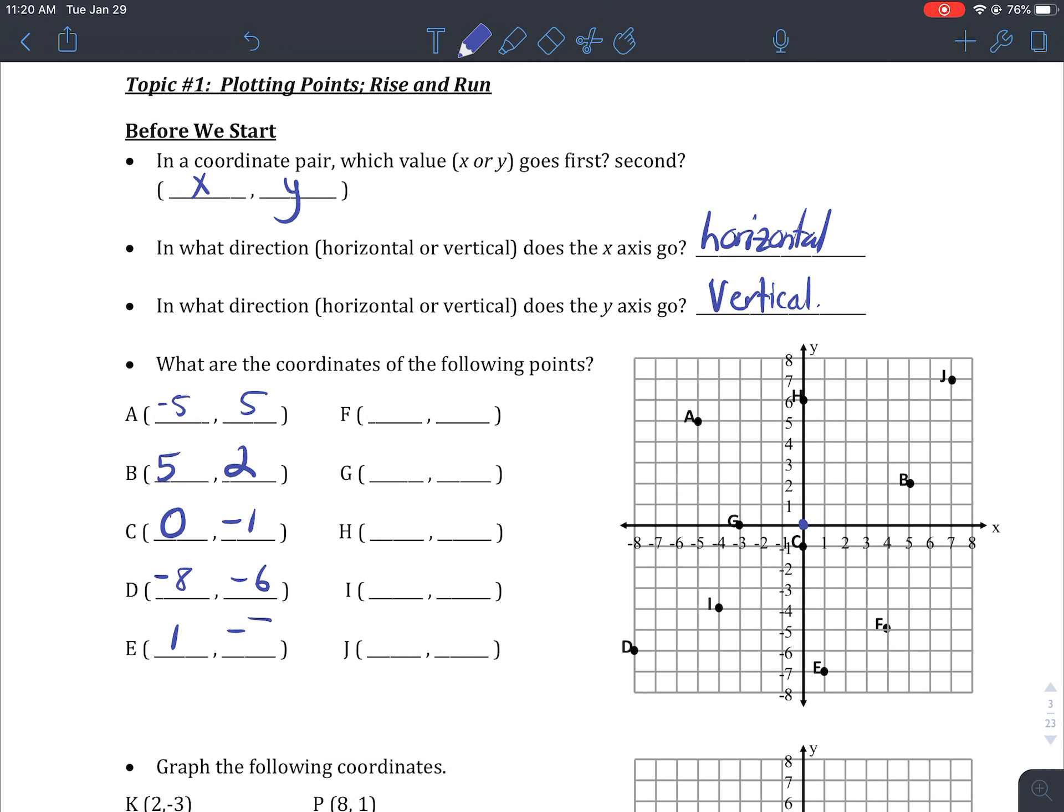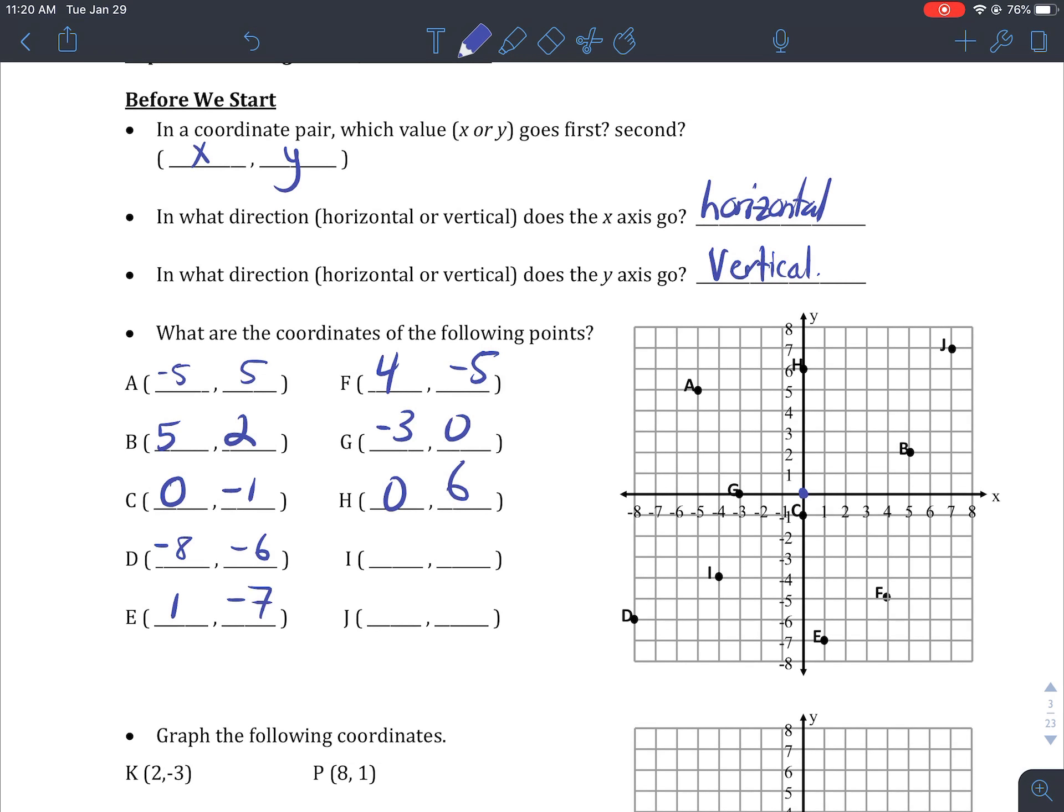Point D is going to be eight left and six down. Point E is going to be one to the right, seven down. Point F, four, negative five. Point G, zero, oh sorry, not zero, negative three, zero. So I'm going three left, but zero up or down. Point H is going to be, where do I find it? Zero, because I'm not going left or right, but I am going six units up.